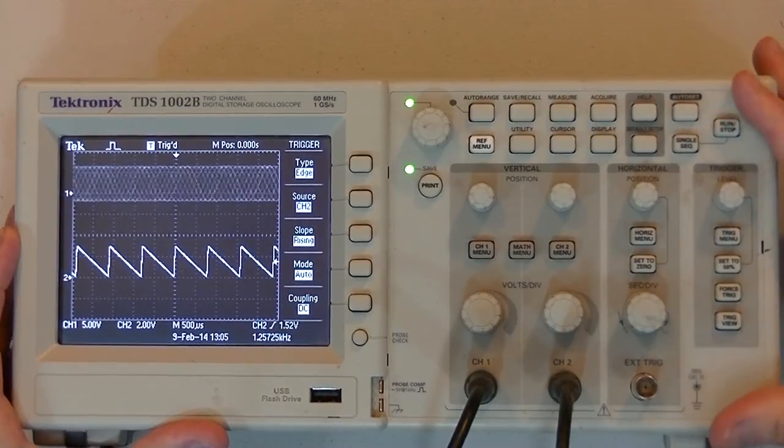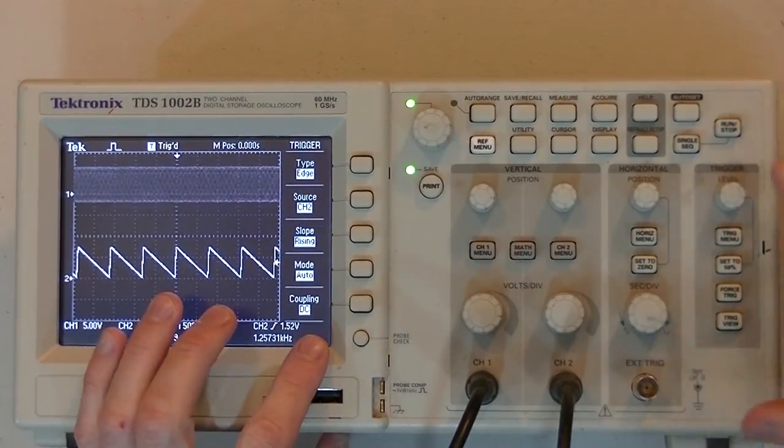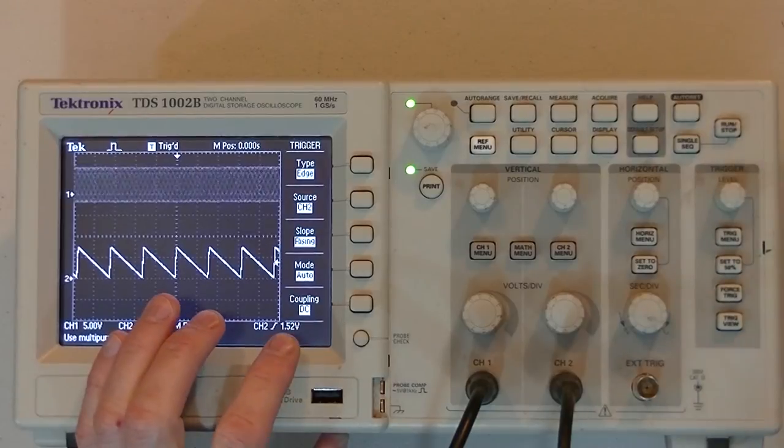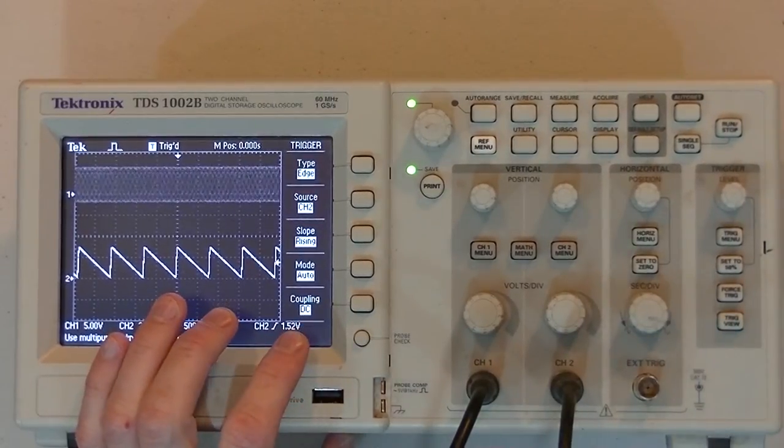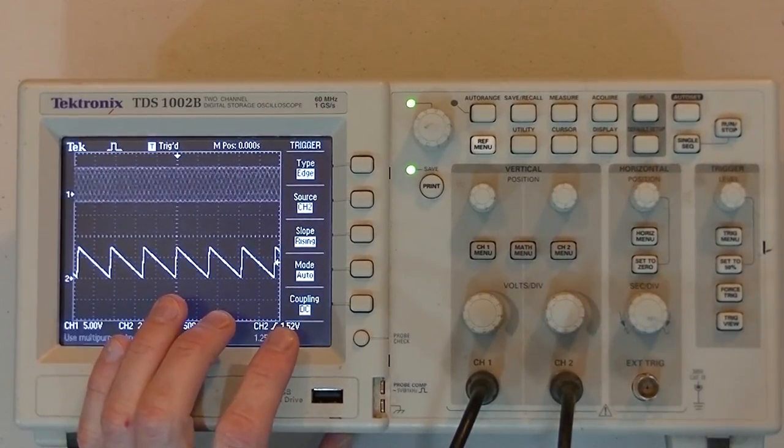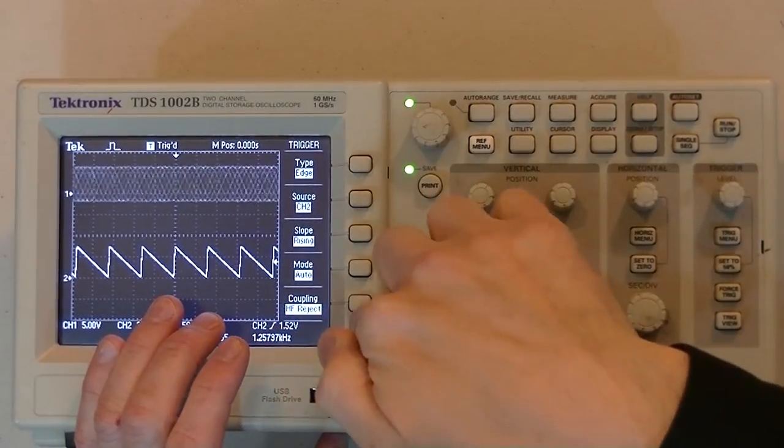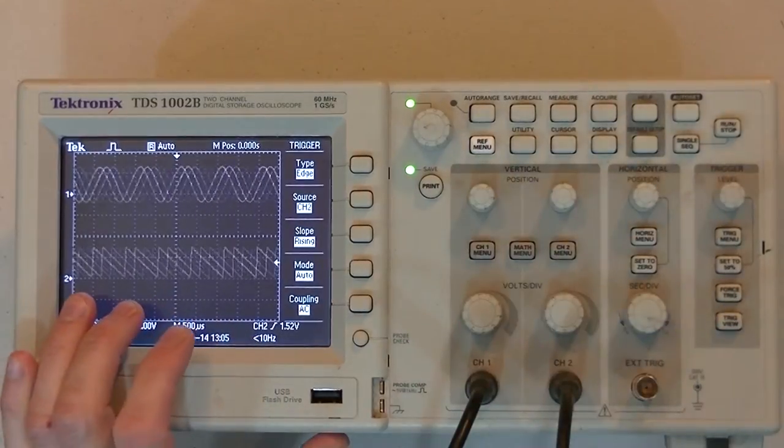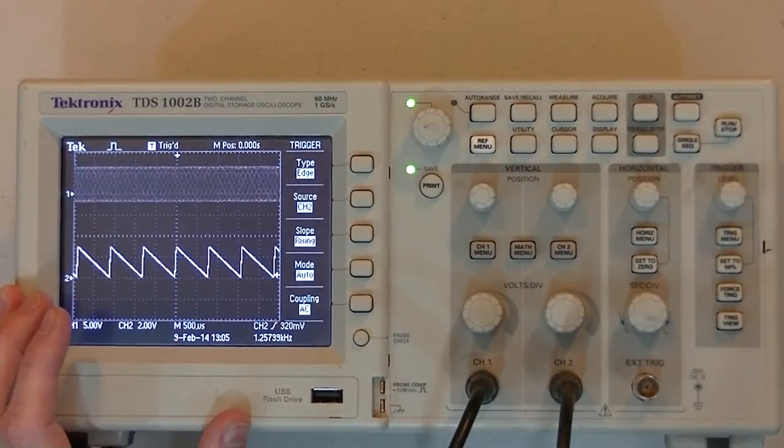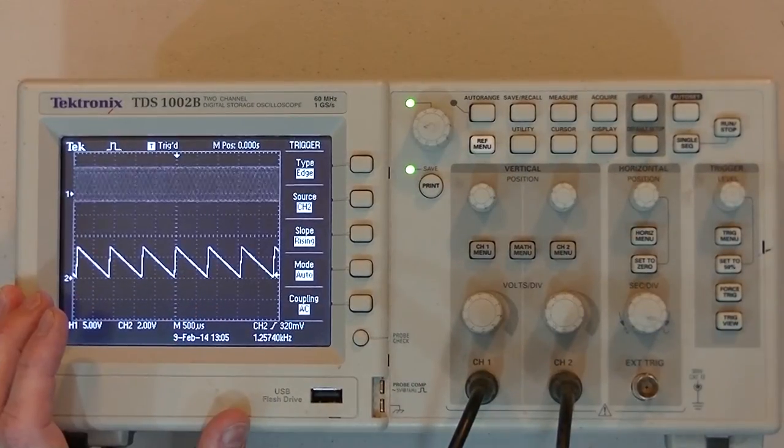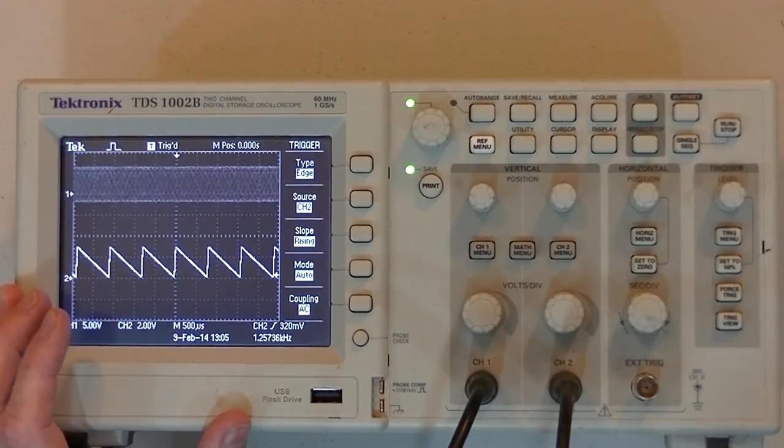And coupling for your trigger, what that is, is DC sends all signals to your trigger. Another type is AC, and what AC does is it removes the DC offset from the signal before it sends it off to the trigger menu.